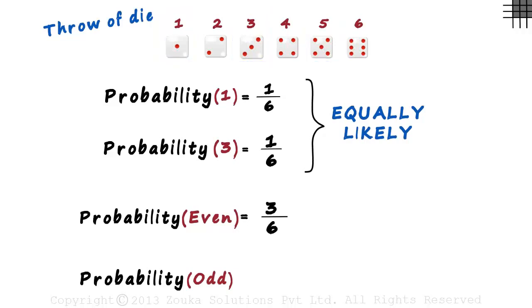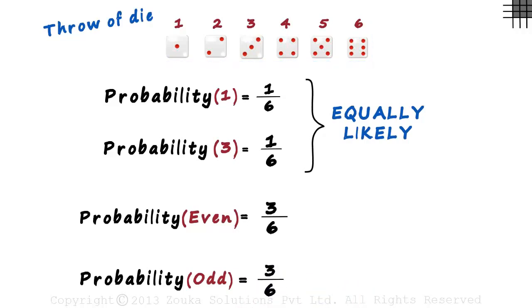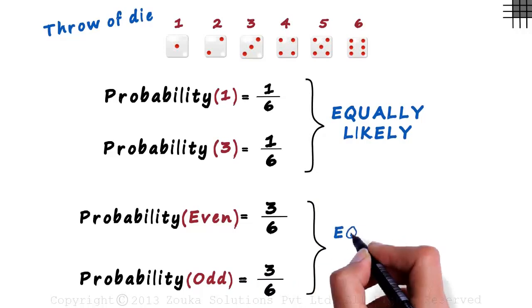It means that there are only three ways in which the dice can land an odd number. Either a 1 or a 3 or a 5. And the total possibilities remain 6. The probability will equal 3 by 6. So these two events are also equally likely.